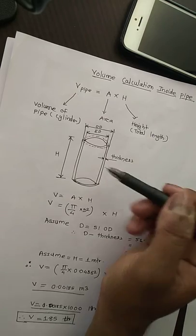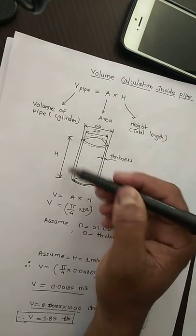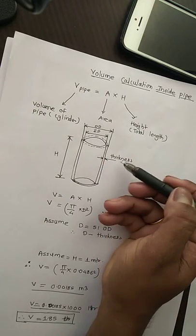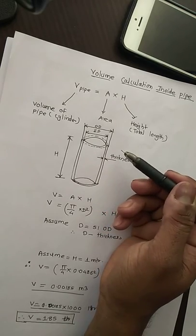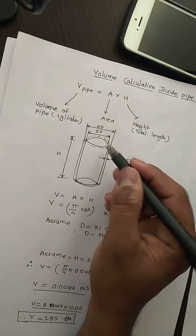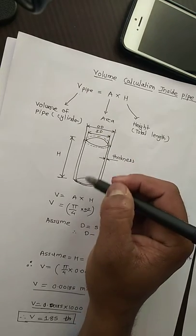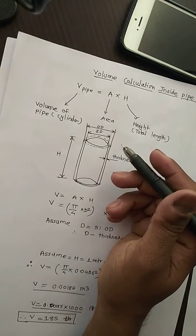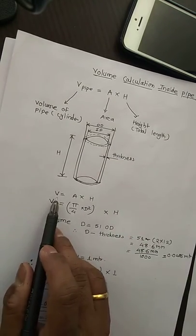I will explain from the drawing. Here H is the total length of the pipe. Here is the ID and OD and thickness of the pipe. When you are doing the calculation, don't consider the outer diameter, consider only inside diameter because it is related with our calculation. Outer diameter is not considered.